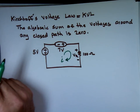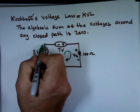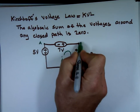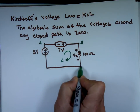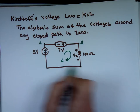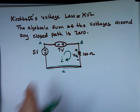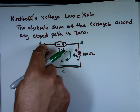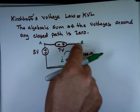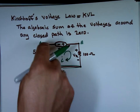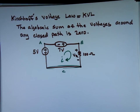So first, do we have a closed path? Notice this is node A, this is node B, this is node C. If you travel from here, there's only one way to go and you end up at the same spot — that is a closed path. So the sum of the voltages in that loop is zero.